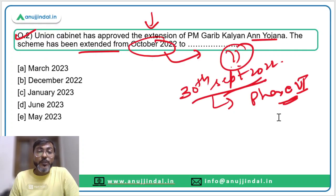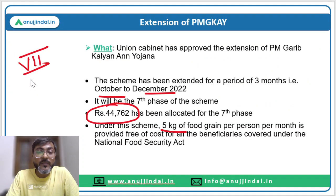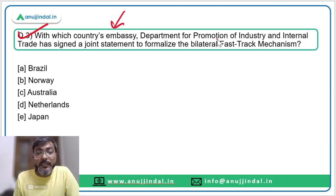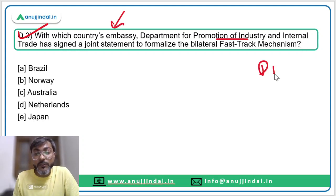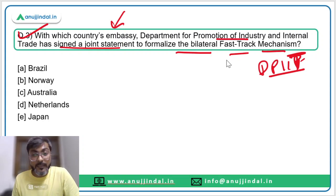The correct answer for question two is December 2022 — option B. Moving ahead to question three: with which country's embassy has the Department for Promotion of Industry and Internal Trade (DPIIT) signed a joint statement to formalize the bilateral fast track mechanism?